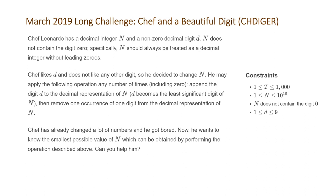The constraints for this problem are that t, the number of test cases, will be between 1 and 1000. The value of our decimal integer n is going to be between 1 and 10 to the 18, and n is guaranteed not to contain any digits of the value zero. Our digit d that Chef likes will be between 1 and 9.